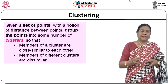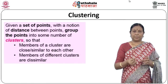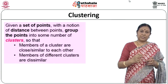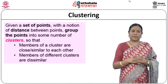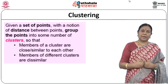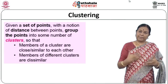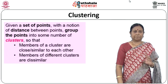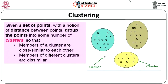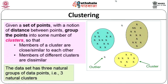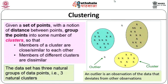Given a set of points with a notion of distance between them, we group the points into clusters such that members of a cluster are close to each other and members of different clusters are far away. The distance is based on similarity — the more distant points are, the less similar they are. In a dataset with three natural groups, we get three clusters. An outlier is a data point that deviates from all other observations and cannot fit into any of the clusters.